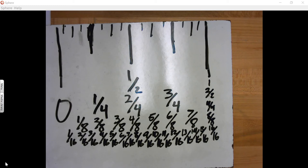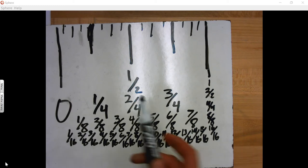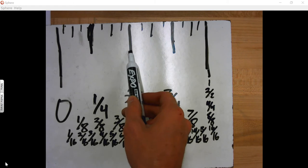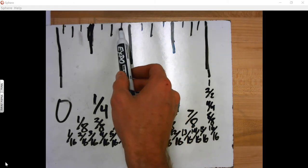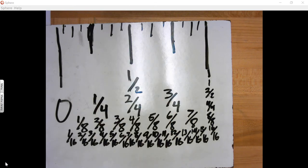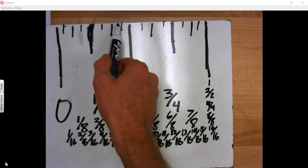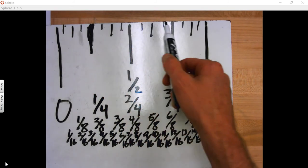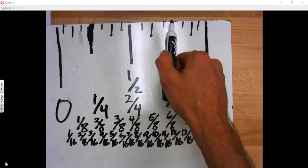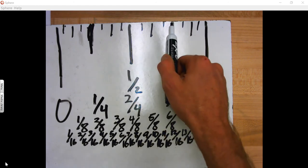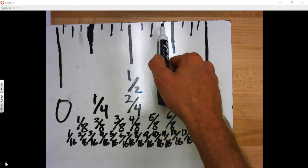Okay, so if I said find seven-sixteenths, you could go to eight-sixteenths, right? And then count back one-sixteenth, and that would give you seven-sixteenths. So if I said to go to eleven-sixteenths, instead of going one, two, three, four, five, six, seven, eight, nine, ten, eleven, because that's really slow, you could go to twelve-sixteenths, right? And then count one back.